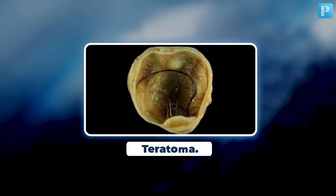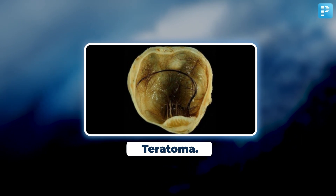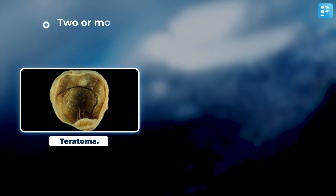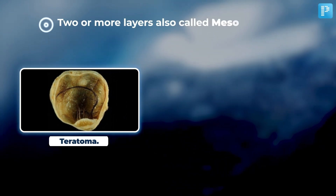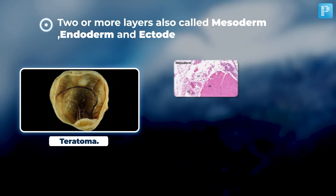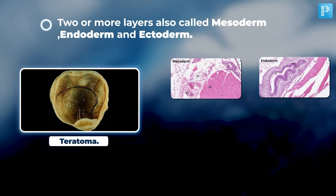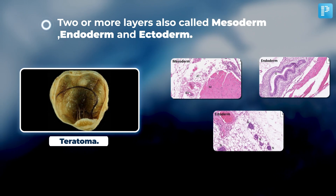Moving on to the next image, which is a case of teratoma. The key findings show two or more germ layers — mesoderm, endoderm, and ectoderm.